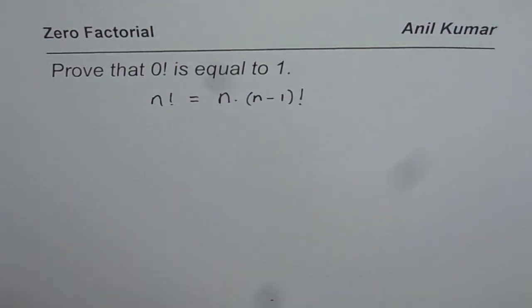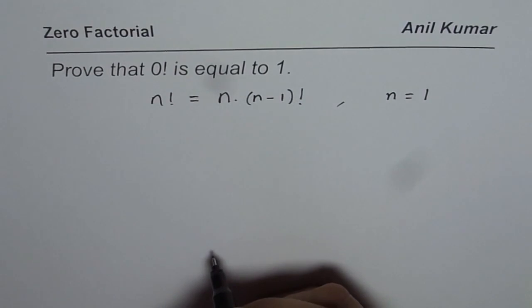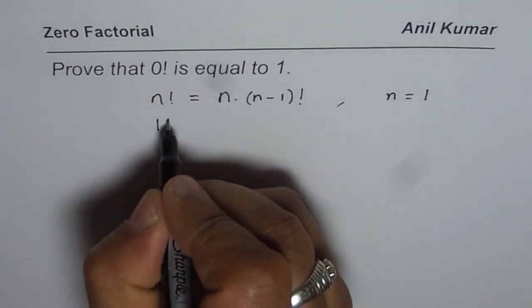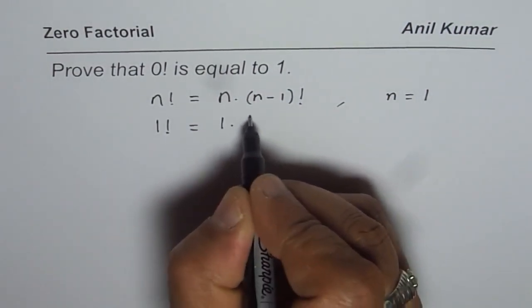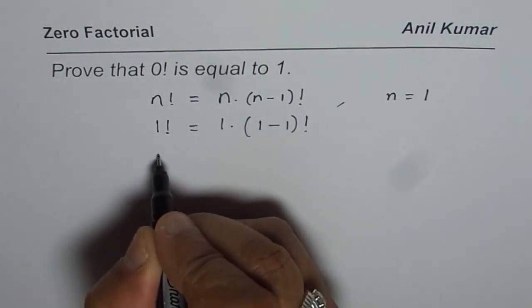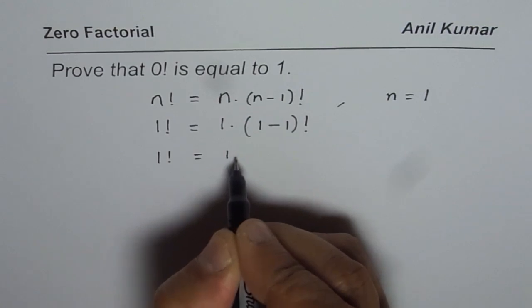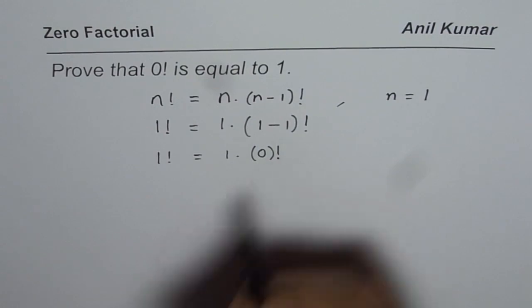Correct? Now, in this equation, if you substitute n equals to 1, then what happens? So you get 1 factorial is equal to n as 1. So, 1 times 1 minus 1 factorial. Now, you get 1 factorial equals to 1 times 1 minus 1 is 0, right? So you get 0 factorial.